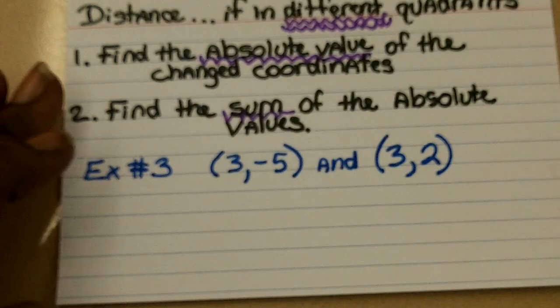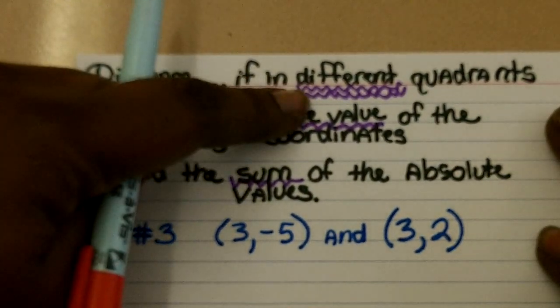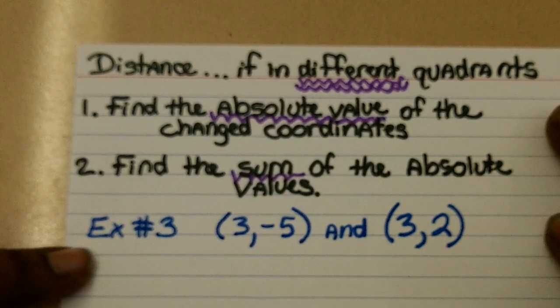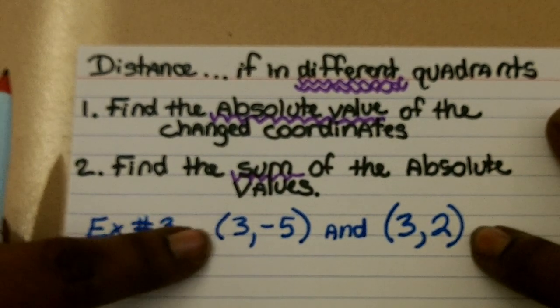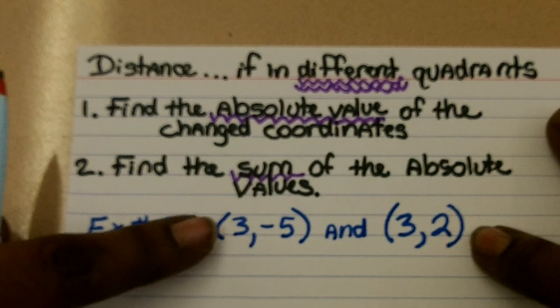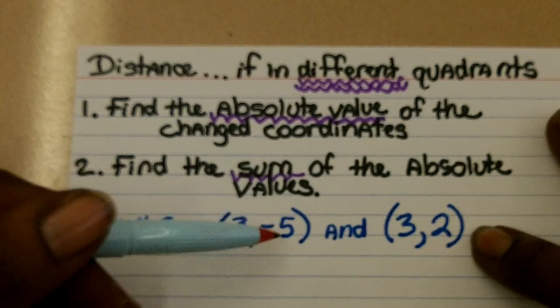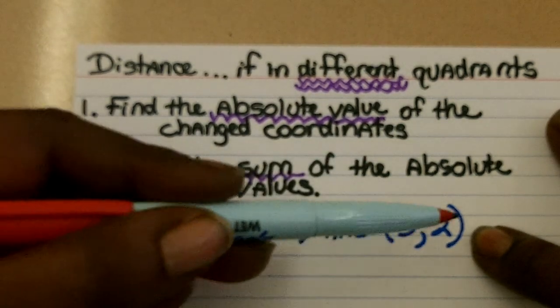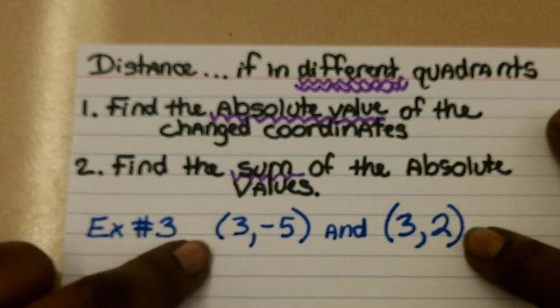Now, if you have two points that are not in the same quadrant, or in other words, they're in different quadrants, your steps are a little different. Remember, you should be able to look at the ordered pairs and determine if they are or are not in the same quadrant. The first ordered pair, the x is positive while the y is negative. In the second ordered pair, both x and y are positive. Therefore, they're not in the same quadrant.